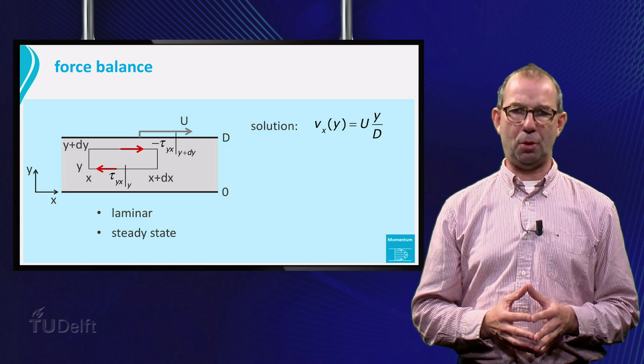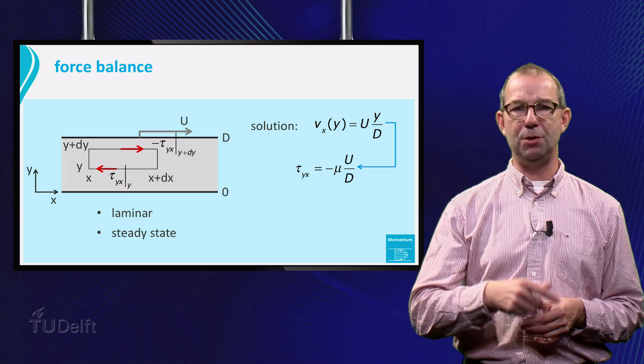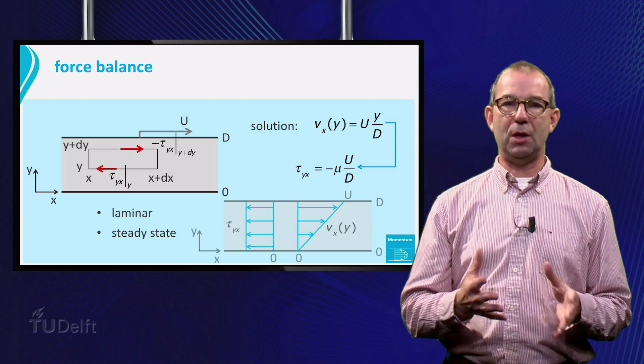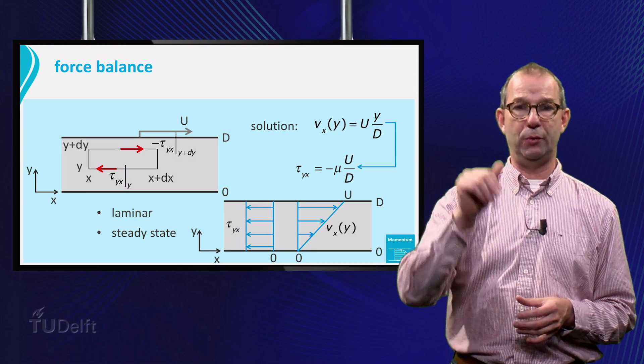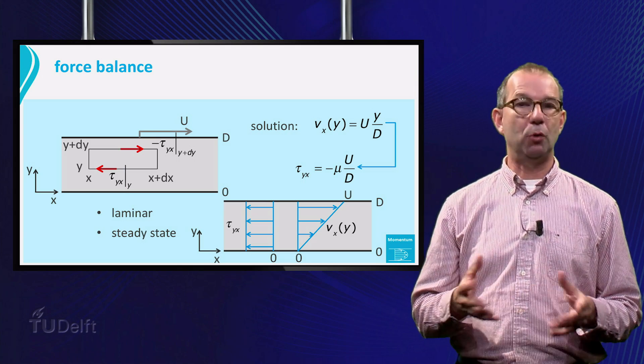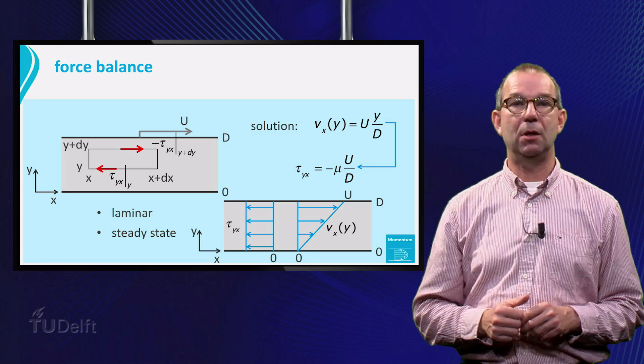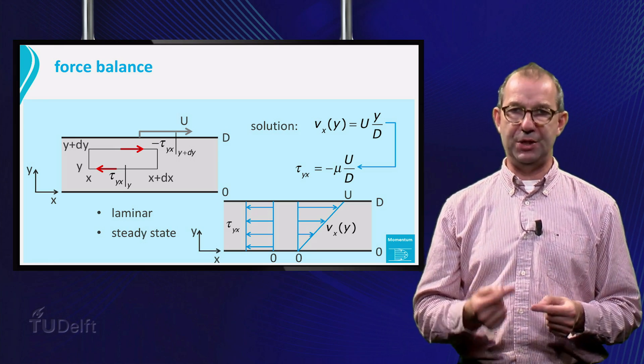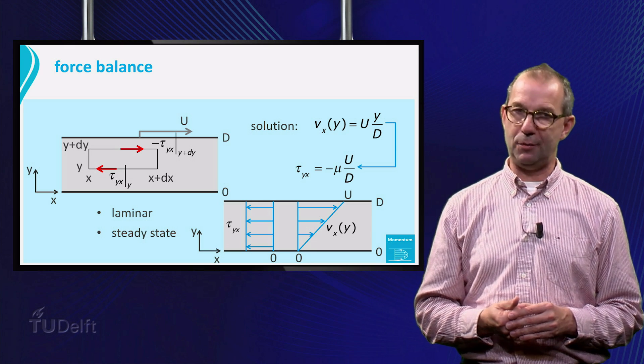From Vx we can also compute the shear stress and find that it is minus mu u over d. If we draw our solutions, we see that the fluid moves faster close to the moving top plate. Makes sense, doesn't it? Moreover, the shear stress is negative everywhere. Also makes sense. The lower fluid slows down the higher layers, hence tau is in the negative x direction.